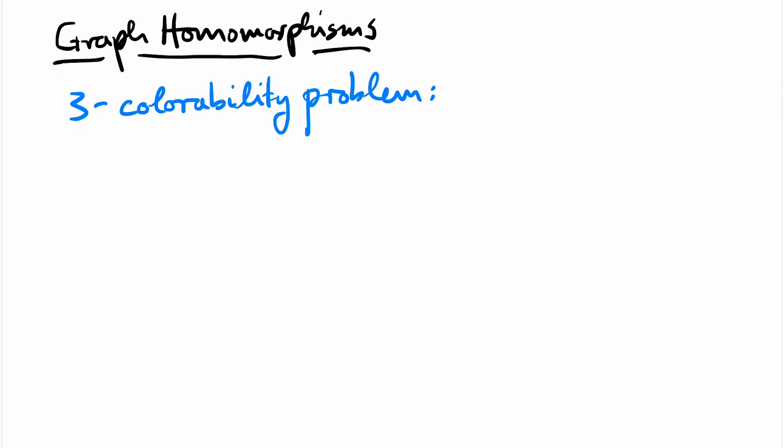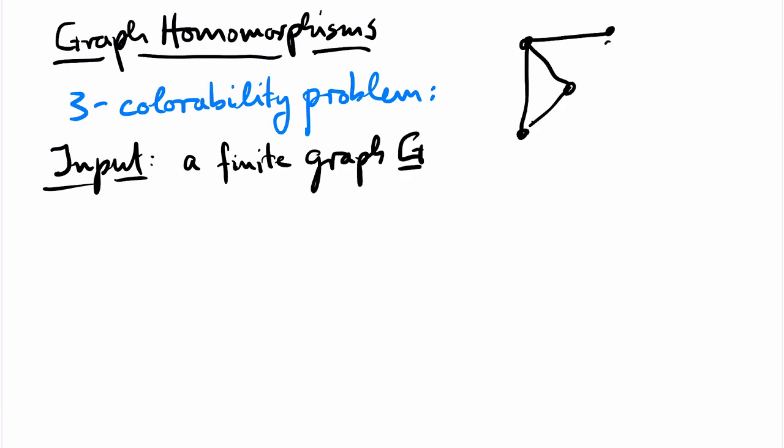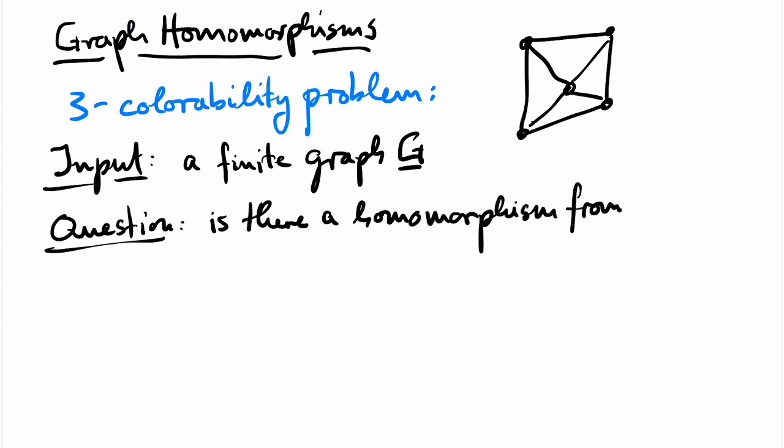The graph three-colorability problem is the following computational problem. The input is a finite graph G. And the question is whether there is a homomorphism from G to the clique with three vertices, often called K3.